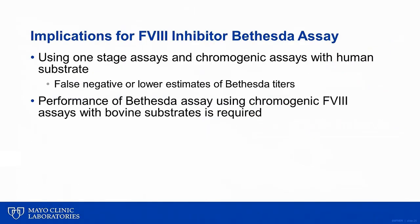The implications of these findings are important for detection of factor VIII inhibitors using the Bethesda assay. Using the one-stage factor VIII assay and chromogenic factor VIII assay with human reagents will result in false negative or lower estimates of true Bethesda titers. For patients on emesizumab, it is very important to ensure that the laboratory performing factor VIII inhibitor titers is using bovine substrates in their chromogenic factor VIII assays.